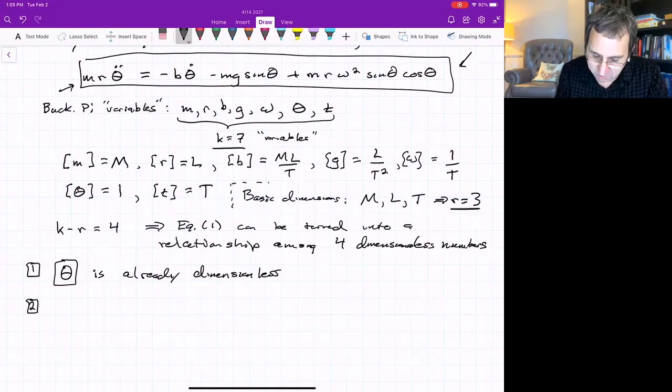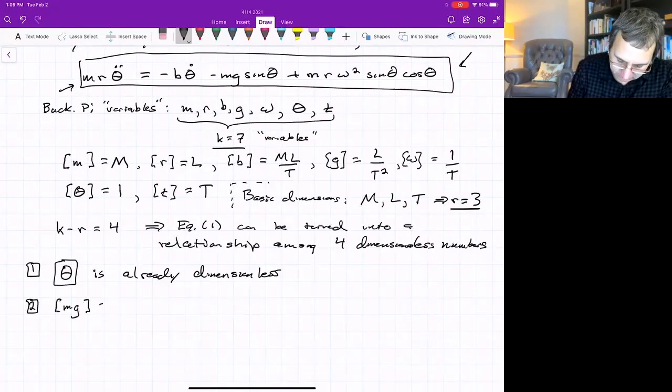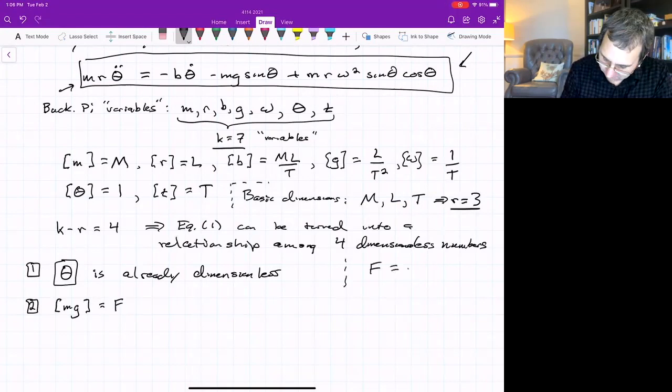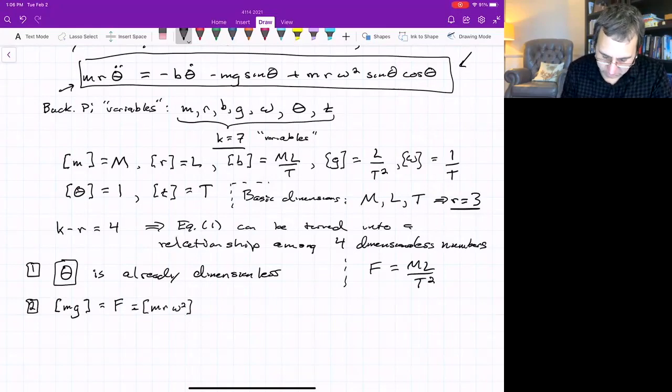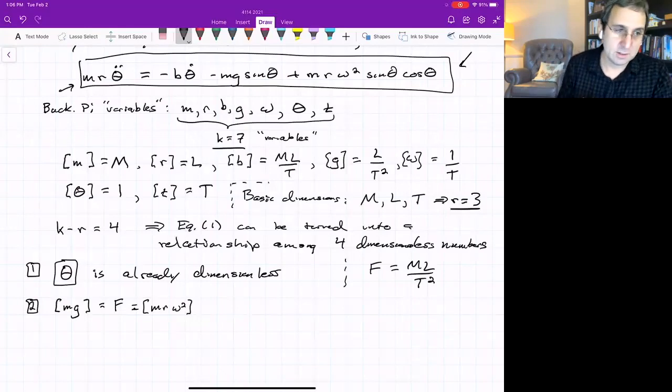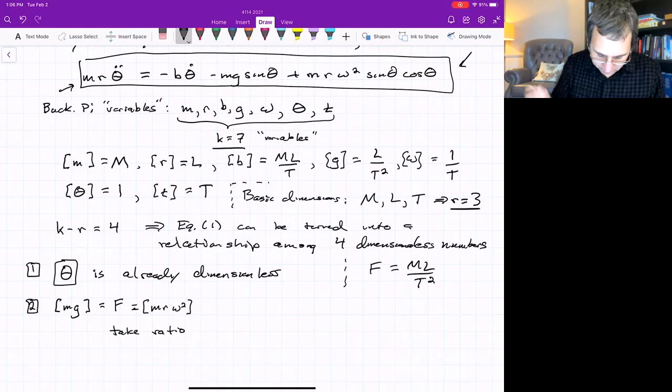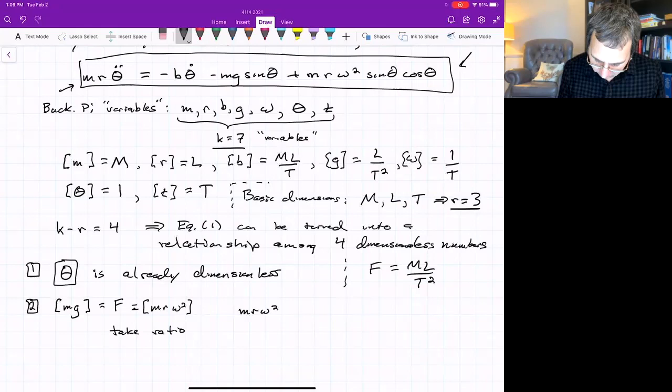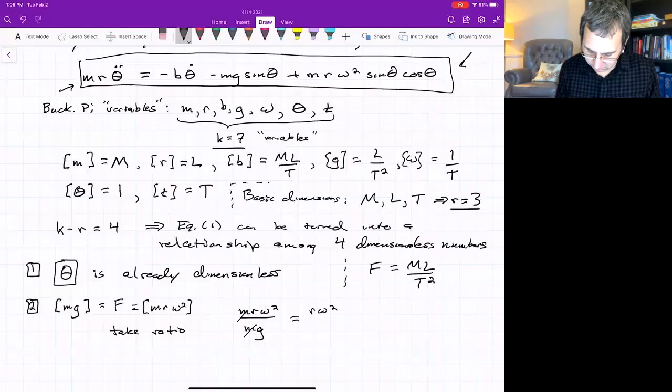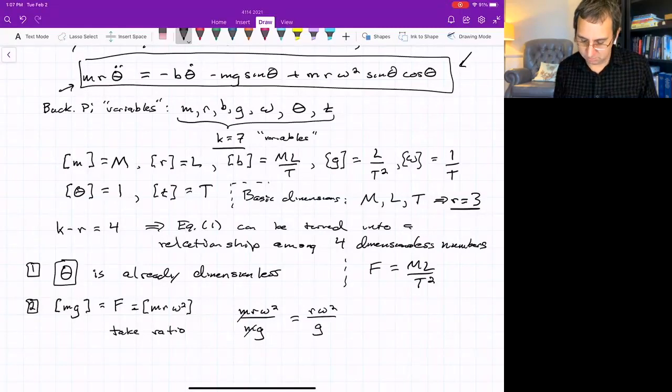What else do we have? We could look at this equation up here. We see that mg, this has units of force. Force is mass times length over time squared. M r omega squared is also dimensions of force. We can take the ratio of these two. The ratio of a force divided by a force is going to be a non-dimensional number. If we take the ratio, I'll do this: M r omega squared over m g. The m's cancel out. We've got r omega squared over g.